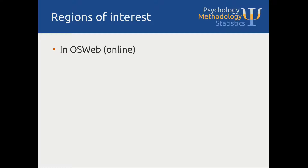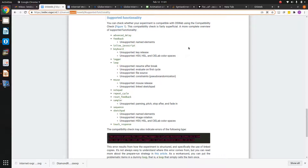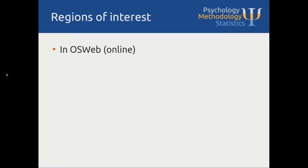In OSWeb, if you want to run your study online, things are a little bit more complicated but still doable. If we look at the documentation page of OSWeb under supported functionality, we see that the functions I just mentioned are actually not supported in OSWeb. We cannot name elements in a sketchpad and we cannot link a sketchpad to a mouse response item. So in OSWeb, to use regions of interest we need some workarounds involving a little bit of coding in JavaScript.